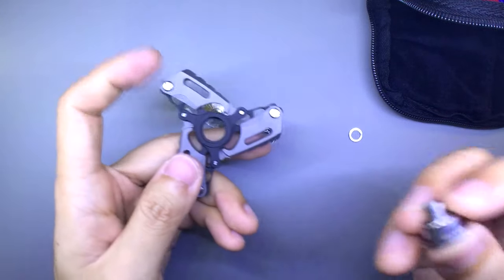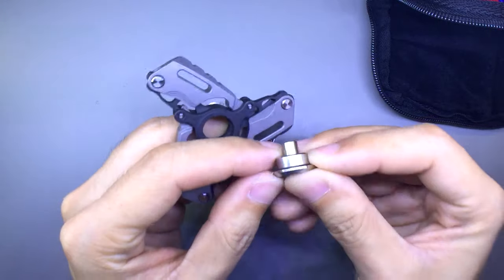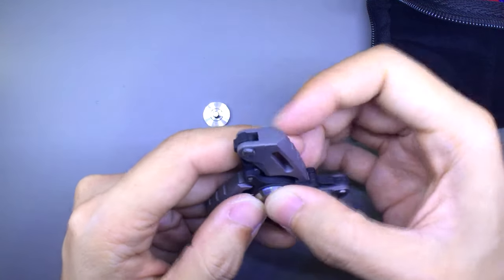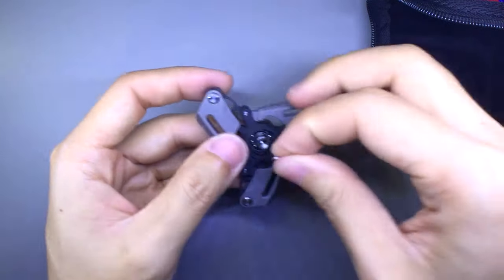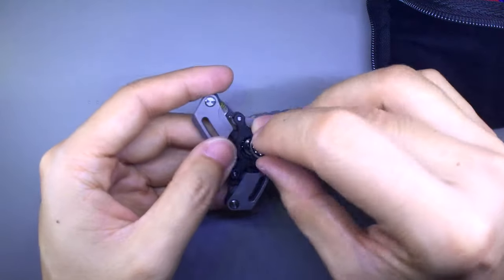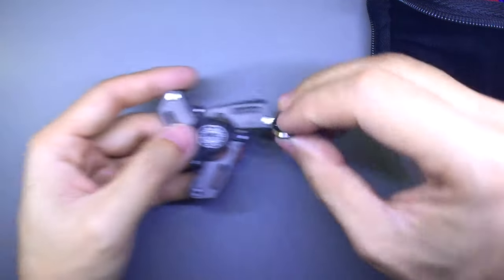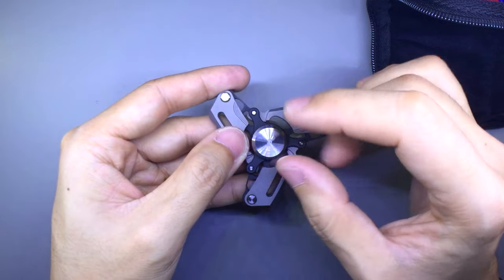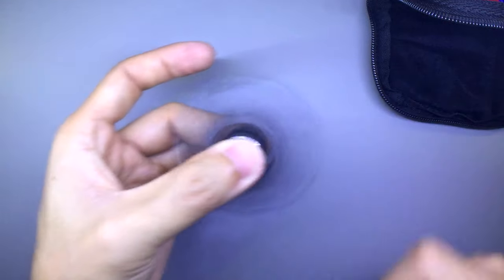Now I'm going to put the buttons back and the best way that I found out is to actually have just one bearing on the button and then you install it this way. Then you put the spacer or the washer on and then the next bearing like this and finally top it off with the other half of the button. And that's how you do it.